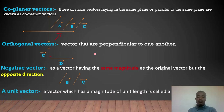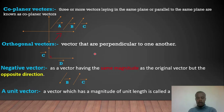A unit vector has a magnitude of unit length — that is, a magnitude of one — and indicates direction only.